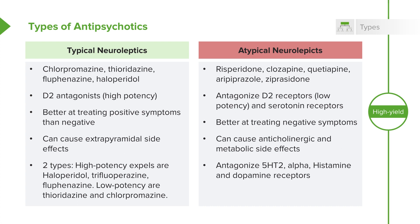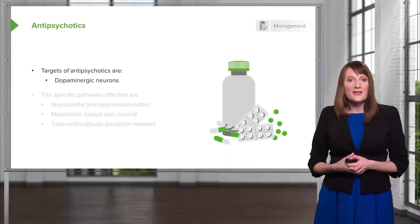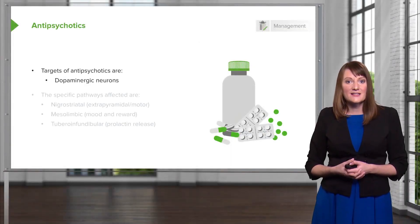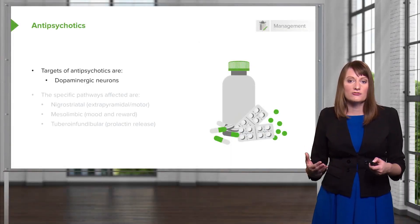When it comes to typical neuroleptics, there are two subtypes: high potency and low potency typical neuroleptics. For the atypical neuroleptics, these tend to not only block dopamine but also have a strong affinity for serotonin, alpha receptors, and histamine receptors as well. So the antipsychotics basically target dopaminergic neurons — that's really the key.